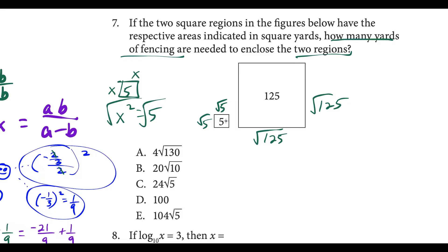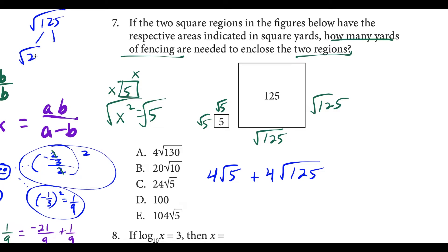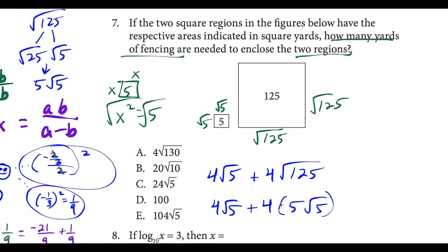The combined perimeter is 4 times square root of 5 plus 4 times square root of 125. The square root of 125 breaks down as square root of 25 times square root of 5, which simplifies to 5 square root 5. So we rewrite this as 4 square root 5 plus 4 times 5 square root 5, giving us 4 square root 5 plus 20 square root 5. Adding radicals, we combine the coefficients: 24 square root 5. So definitely choice C.